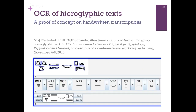As for OCR, a very good proof of concept has been made by Markian Nederhof on handwritten transcription of hieroglyphic text. It's very difficult to do OCR on pictures of monumental text, but when it comes to full editions of many texts from the same period and hand, a lot of progress can be made. We still need a lot of text to be added to the corpora.